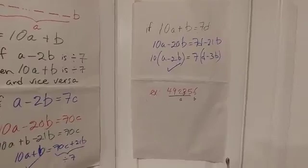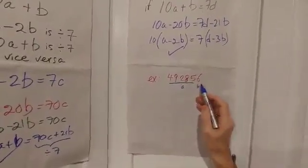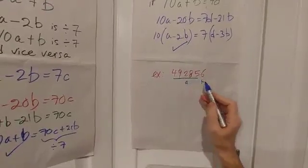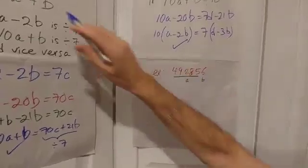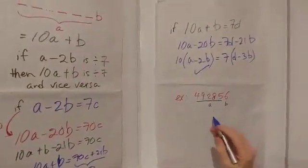Now let's apply this to a specific example. Let's see I take the number 492856. A is the first five digits, and B is the last digit, like I explained over here. Is that divisible by seven?